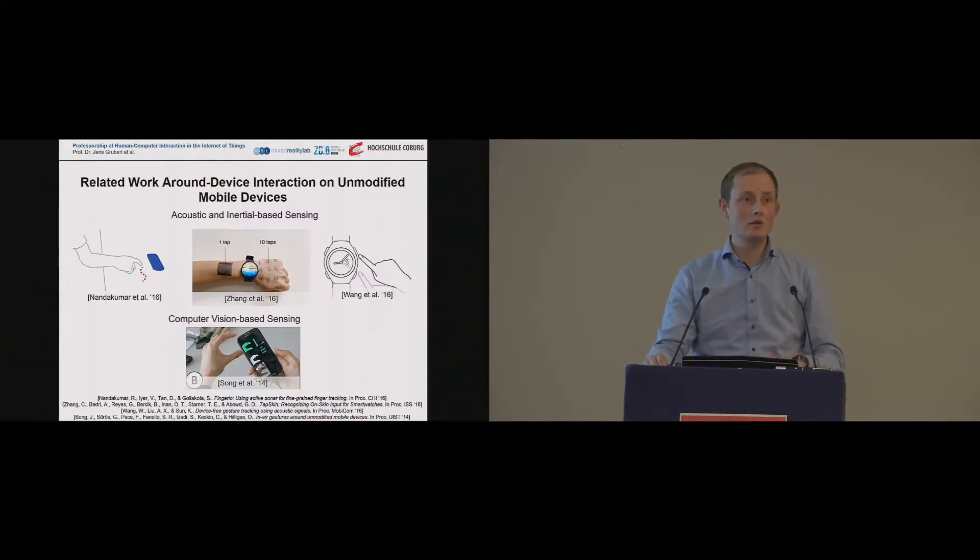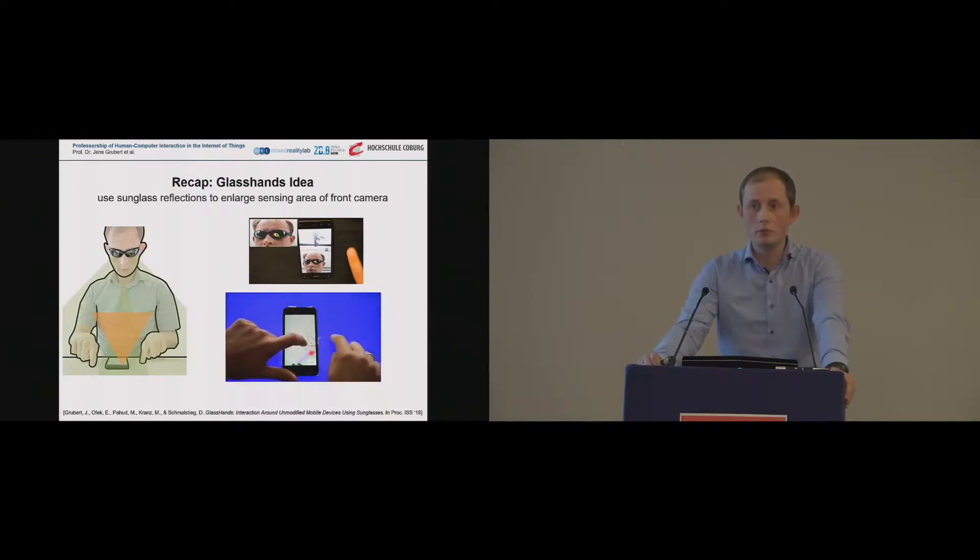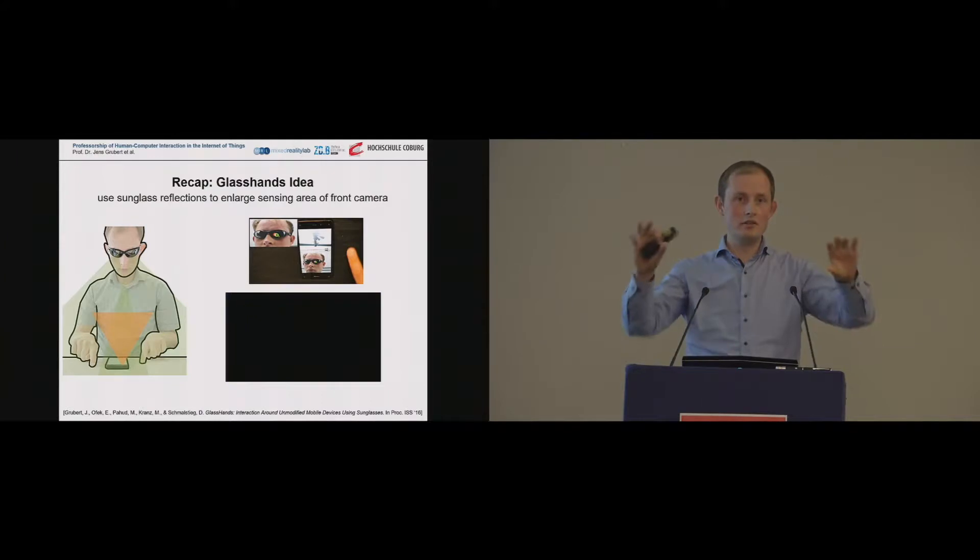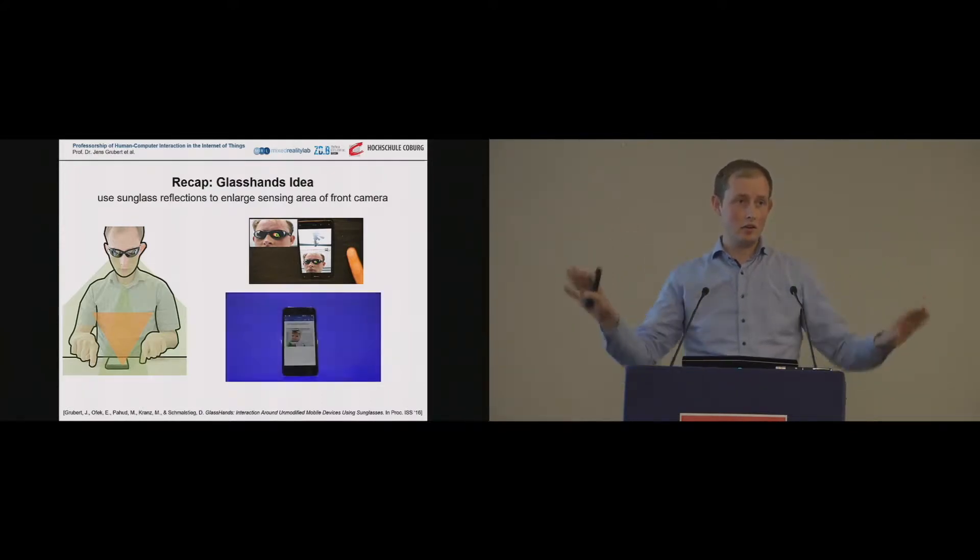And to understand what we're trying to achieve, I have to take you back, basically to last year, to give you a short recap of what we tried to solve back then. So what we did is we used the front camera of a mobile device and basically looked onto reflections of a sunglass or a reflective visor that a user was wearing. And this enabled us to use the side of the mobile device's input space and to enable various interaction techniques.